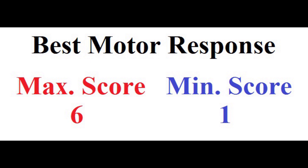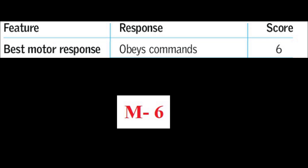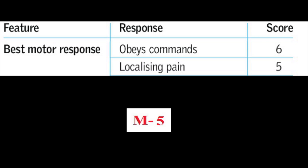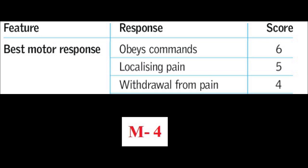The last parameter in GCS is motor response. The maximum score is 6 and minimum score is 1. M6 means obeying commands — we ask the patient to move the limbs or fingers, and if they do so, motor response is good. M5 is localizing to painful stimulus — we give a painful stimulus and check whether the patient is able to localize the area. For example, we pinch the trapezius muscle and the patient moves their hand to reach that area, meaning they can sense the pain and its exact location. M4 is normal flexion or withdrawing from pain — when we give a pinch, the patient suddenly withdraws that limb to avoid the pain.